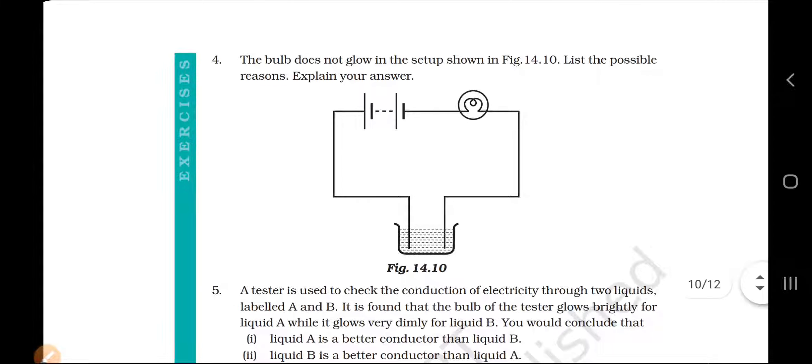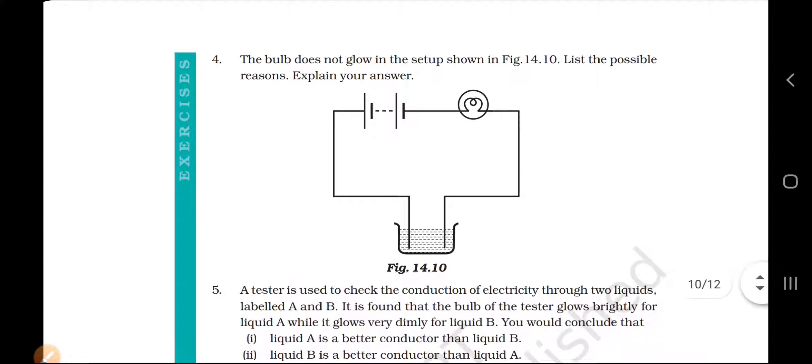Number 3 can be the battery may be used up. Number 4, the bulb may be fused. Fused bulb is where the filament is broken. And number 5 can be the wires are not connected properly. The wires may be loose.